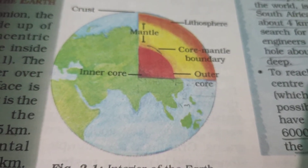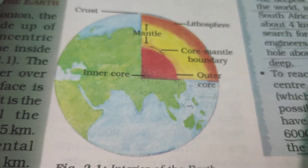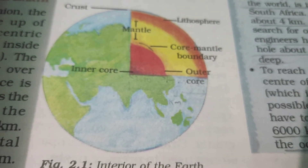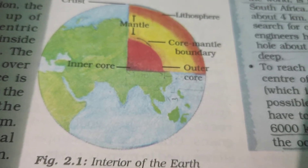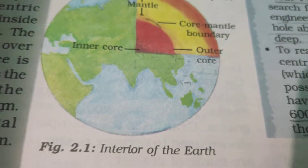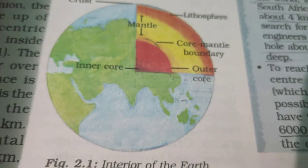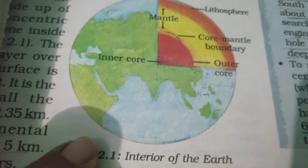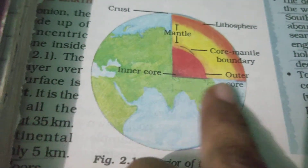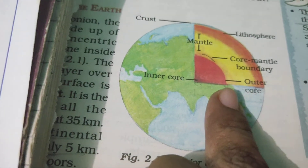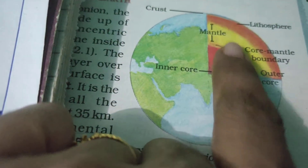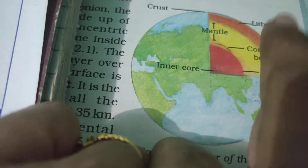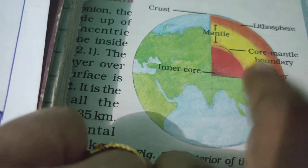In the previous class we discussed about crust. And before that we discussed about the evolution of the Earth, and today we are discussing about mantle. Let's see — this is a picture of the Earth. It has three layers: crust, mantle, and core. This mantle is what we are going to discuss today.